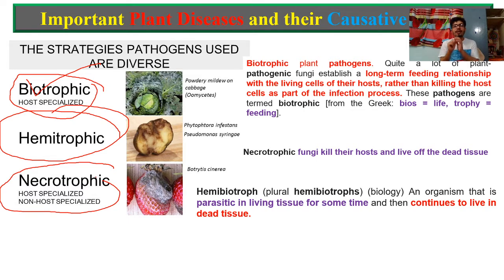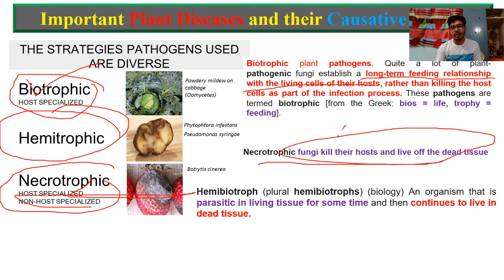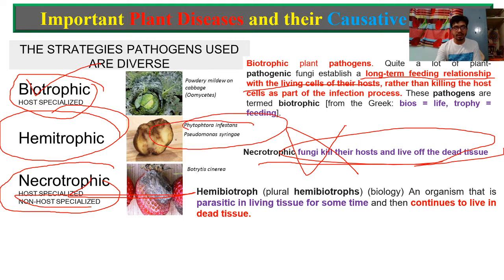Hemibiotropic means they have the nature of both biotropic and necrotropic. These organisms start with a biotropic nature and then switch to a necrotropic nature. They have parasitic modes — living on the living tissue initially, but they can continue to live on the dead tissue. Biotropic cannot live on dead tissue; they can only live with living tissues. An example of a hemibiotropic organism is Phytophthora infestans, which caused the devastating Irish famine.